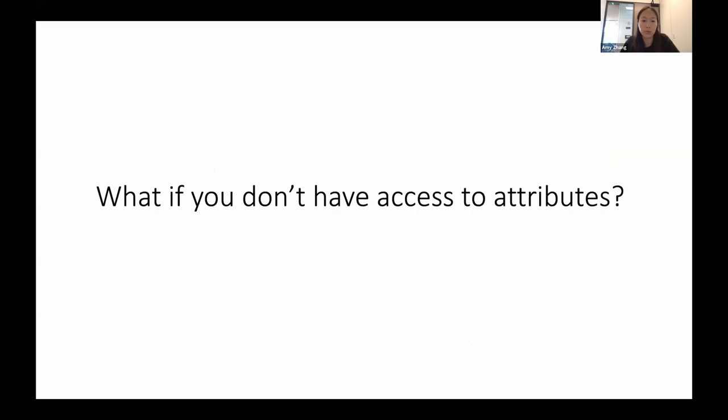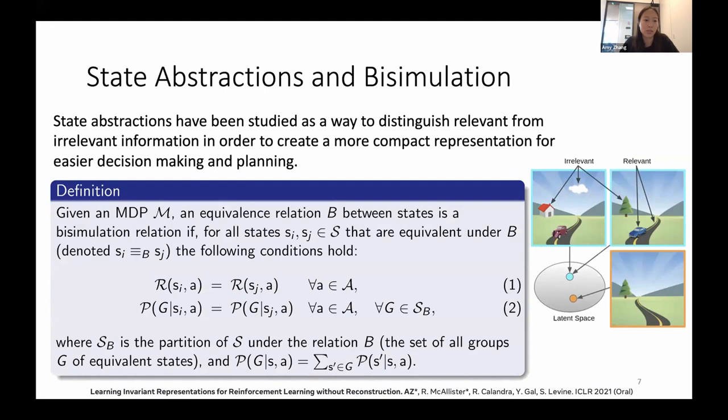I think this shouldn't come as much of a surprise, but this work does assume that we have access to these nice attributes. That's typically not true in a lot of real-world settings. So what do we do if you don't have access to attributes? This is where state abstractions and representation learning comes in. State abstractions have been studied as a way to distinguish relevant from irrelevant information in order to create a more compact representation for easier decision-making and planning. A specific type of state abstraction that I'm going to talk about here is bisimulation.